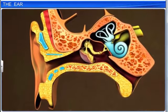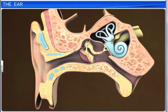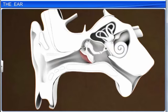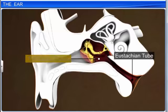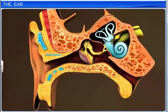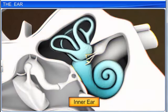Air pressure also needs to be maintained on both sides of the eardrum for normal hearing. This is done by the eustachian tube, which connects the tympanic cavity to the pharynx. The inner ear consists of a complex system of intercommunicating chambers and tubes called a labyrinth.